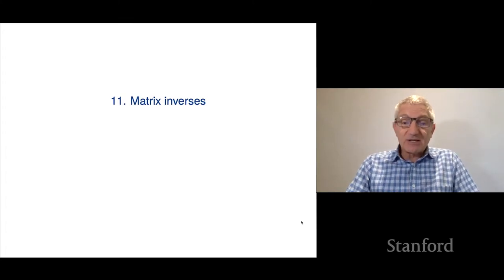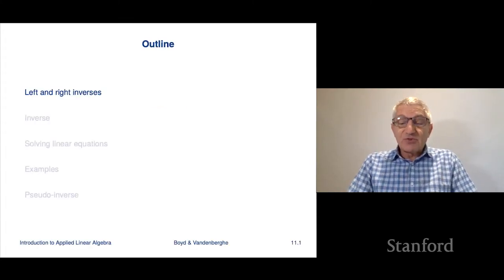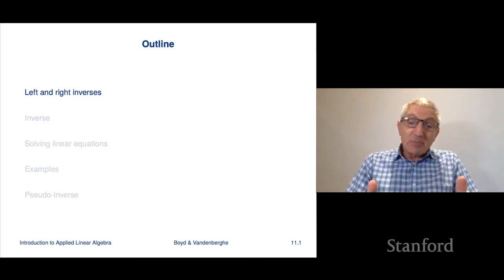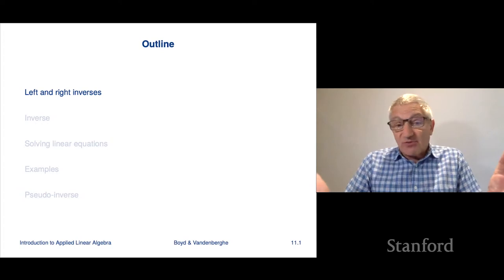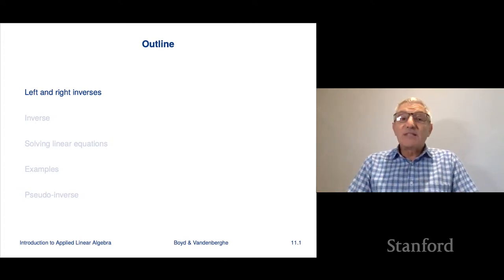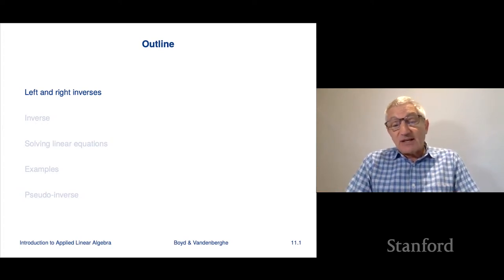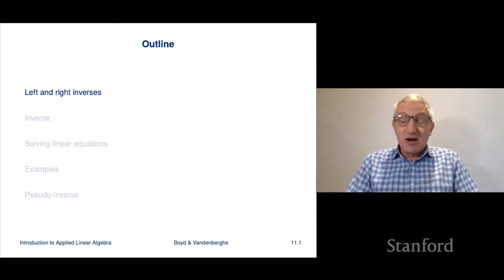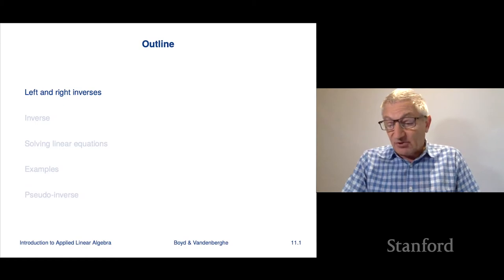Chapter 11 is on the idea of a matrix inverse. It's a bit more complicated with matrices. For numbers, the inverse is simply 1 over the number — the inverse of 2 is a half. We'll see what we're going to be looking at in this chapter is an analog of that for matrices. It is in fact much more complicated, and we'll start with the fact that there's a notion of both a left and a right inverse.